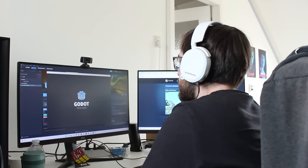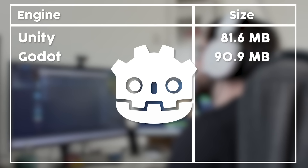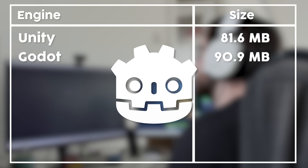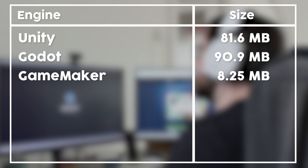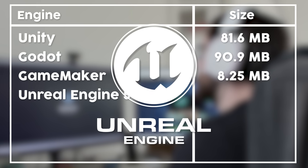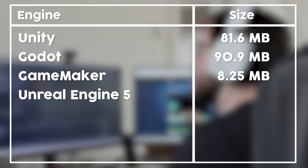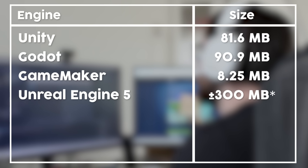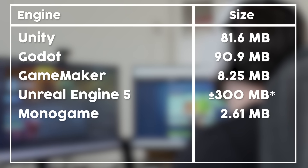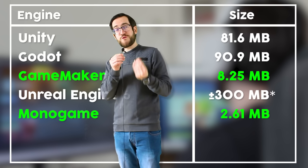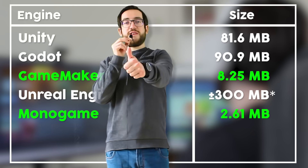Because of this, I was curious what this number would be for other engines, so I did the same thing. Godot was surprisingly bigger — 90.9 megabytes to be exact. This was my first time exporting something in Godot, so who knows if I did something wrong, but it was interesting to see it was bigger than Unity, which I did not expect. GameMaker ended up being only 8.25 megabytes, which is crazy — good on them for actually making sense. As for Unreal Engine 5, I just Googled it and it says about 300 megabytes. I also tried Monogame, which is C#, but pretty basic without any of the Unity shenanigans — that ended up being only 2.61 megabytes. Clearly, Monogame and GameMaker are the real winners here.